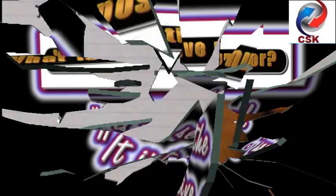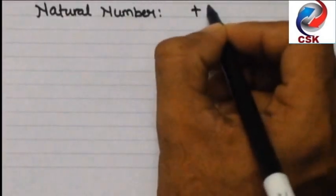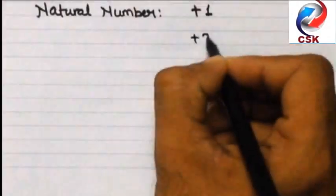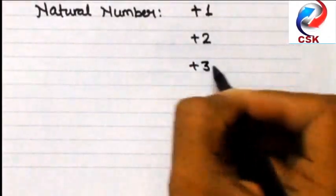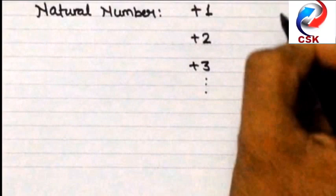Now let's consider some positive integers. Let's say plus 1, plus 2, plus 3. All these are positive integers, so all these numbers are natural numbers.